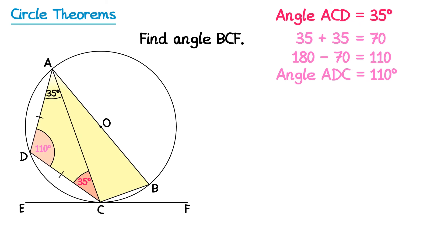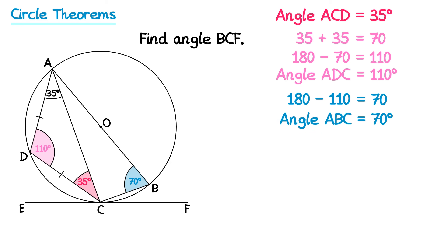Next we're going to look at the whole quadrilateral. This is a cyclic quadrilateral because A, B, C and D are all on the circumference. The theorem says opposite angles in a cyclic quadrilateral make 180 degrees. So the angle opposite the 110-degree angle — angle ABC — is found by doing 180 minus 110, which gives 70 degrees.